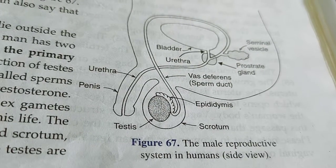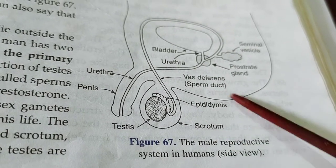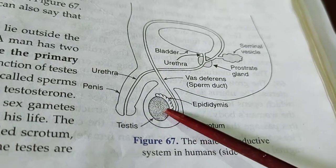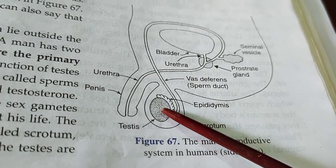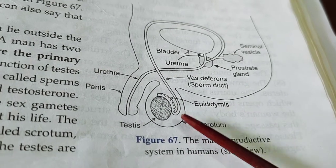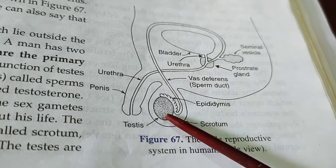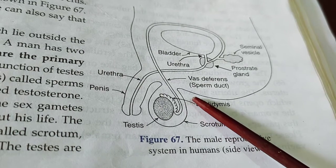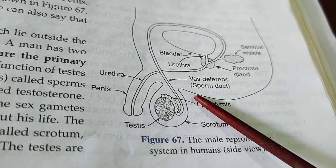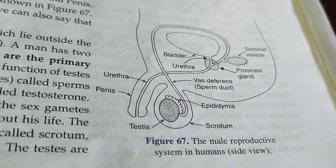The testes are the primary reproductive organ in the human male body. Their main functions are: first, the production of sperms; and second, the production of the male reproductive hormone — testosterone. Testosterone is produced from the testes and plays a major role in controlling the primary sexual characteristics as well as the secondary sexual characteristics in human males.